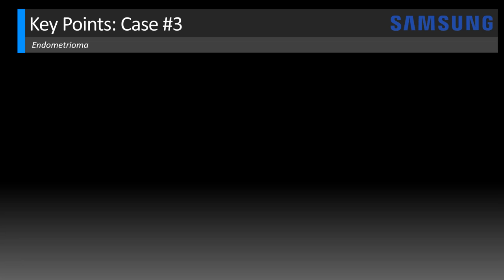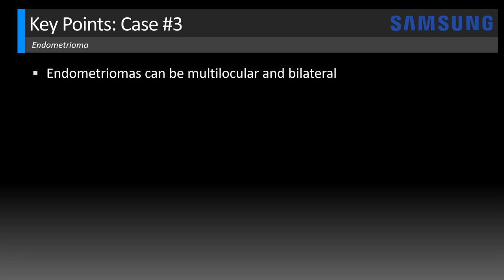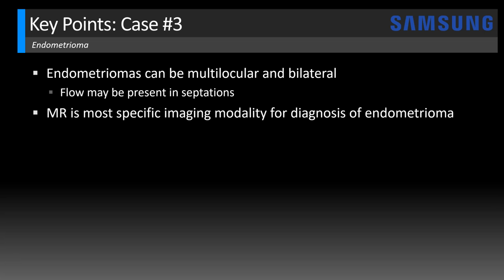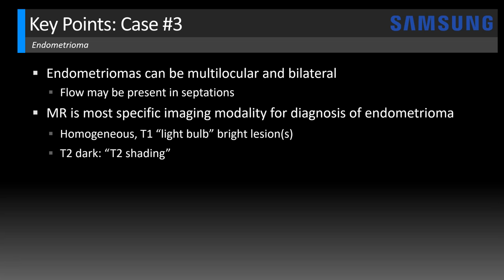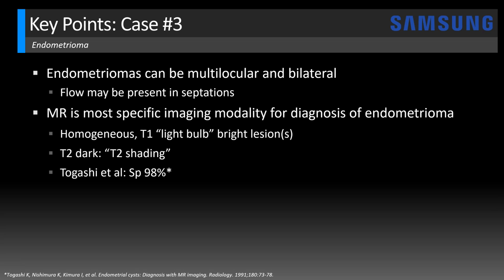Let's review key points for the final case. Endometriomas can be multilocular and bilateral. Flow may be present in the septations, but you should not see mural nodularity containing flow — that should clue you in to a possible neoplasm or malignant transformation. While ultrasound is an excellent imaging tool, MRI is actually the most specific modality for diagnosing endometrioma. They will typically have a homogeneous T1 bright appearance — I like to describe it as light bulb bright — and then become dark on T2 weighted imaging. That shift is known as T2 shading, described by Dr. Togashi in 1991 as having 98% specificity in the diagnosis of endometrioma.